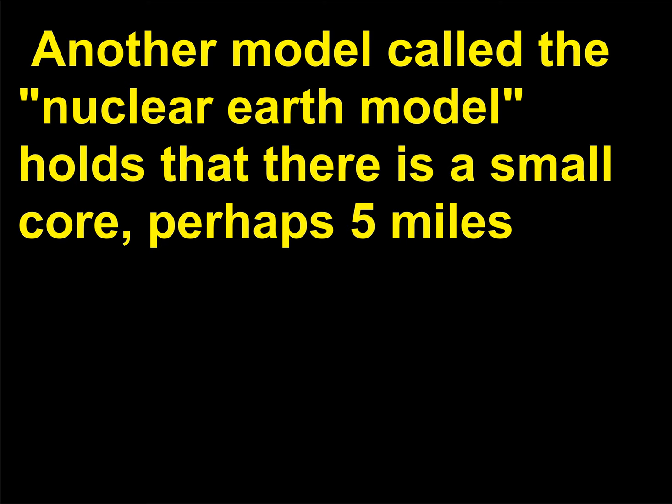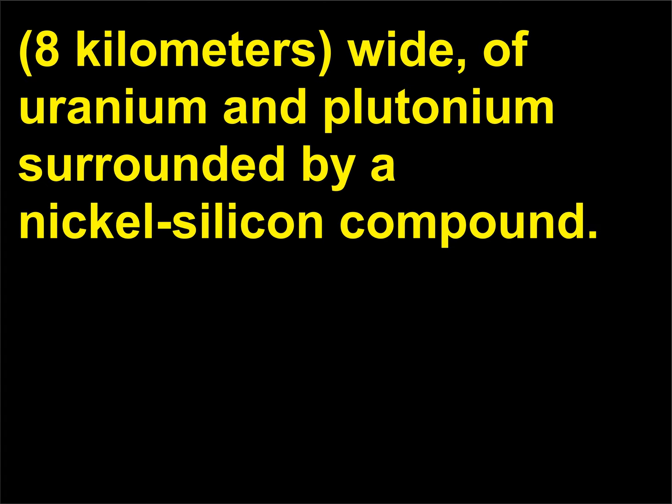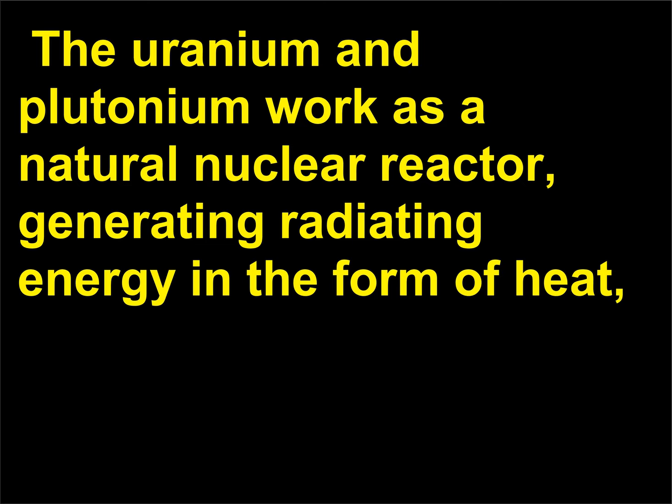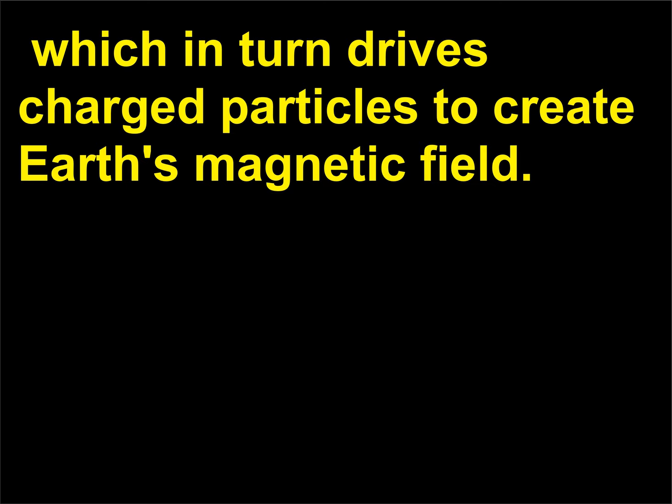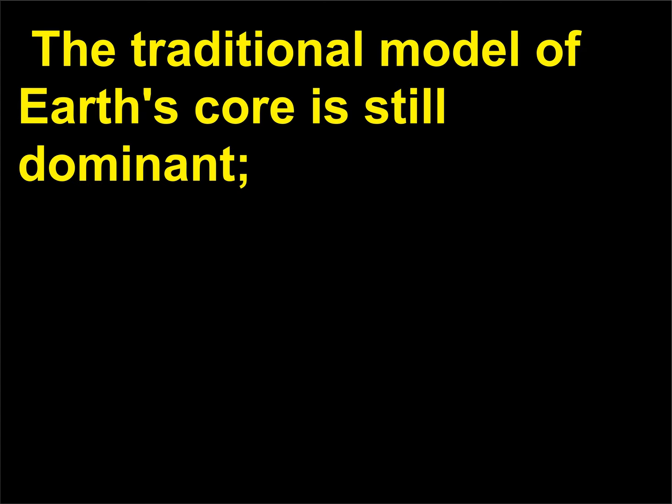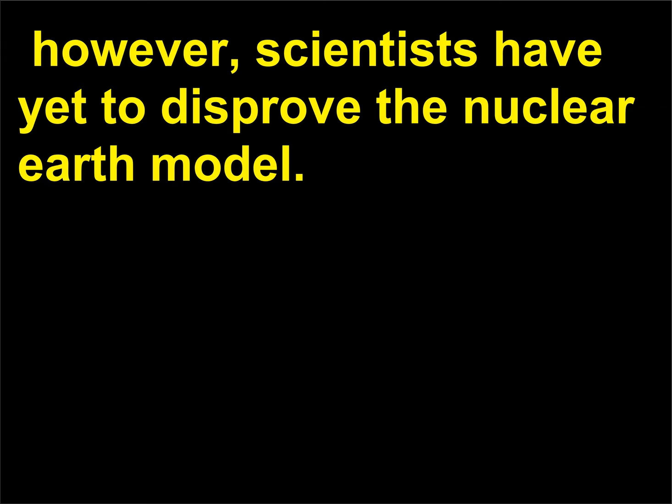Another model called the nuclear Earth model holds that there is a small core, perhaps 5 miles, 8 kilometers, wide, of uranium and plutonium surrounded by a nickel-silicon compound. The uranium and plutonium work as a natural nuclear reactor, generating radiating energy in the form of heat, which in turn drives charged particles to create Earth's magnetic field. The traditional model of Earth's core is still dominant; however, scientists have yet to disprove the nuclear Earth model.